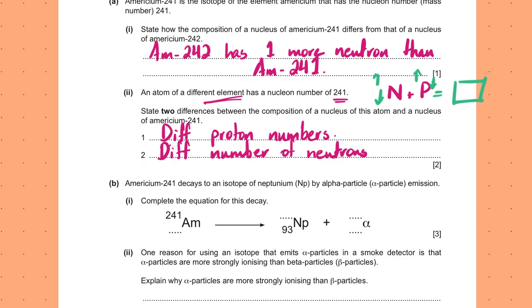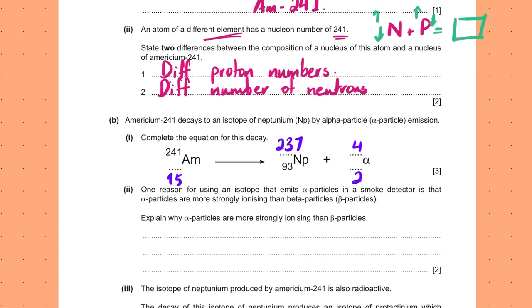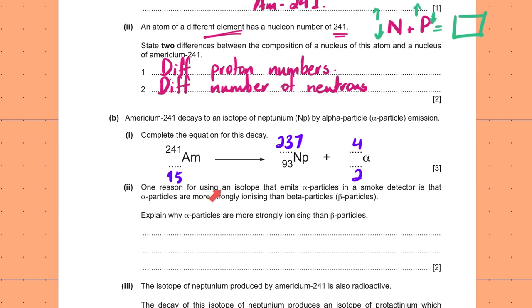Americium-241 decays to an isotope of neptunium by alpha particle emission. Complete the decay equation. Alpha is ⁴₂He. Using conservation of nucleon number and proton number: 95 = 93 + 2, and 241 = 237 + 4. So the neptunium isotope has nucleon number 237.